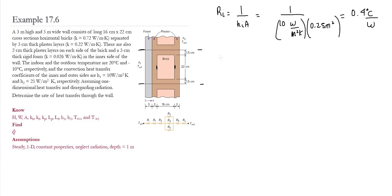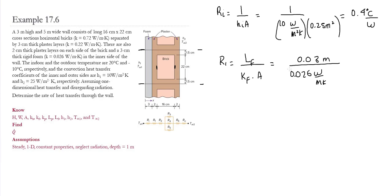R1 is the conduction resistance in the foam, calculated as the length of the foam divided by K of the foam times the cross-sectional area. The foam length is 0.03 meters, the thermal conductivity of the foam is 0.026 W/mK, and the cross-sectional area is 0.25 m². This gives R1 equal to 4.62°C/W.